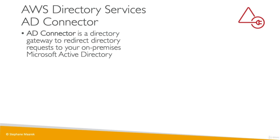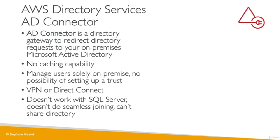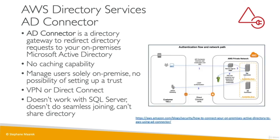Now we have AD Connector, which is much simpler. It's going to be a gateway — a proxy — to redirect your requests to your on-premise Microsoft Active Directory. There's no caching capability and no MFA. The users are solely managed on-premise. There is no trust being set up, and you need VPN or Direct Connect. It doesn't have integration with SQL Server, doesn't do seamless joining, and can't share directory. If the connection goes down, the AD Connector is basically useless. When users connect through the AD Connector, it will proxy the authentication all the way to the Active Directory and get the login back to users, though there will be a bit more latency.